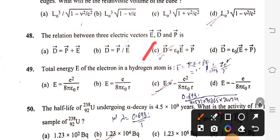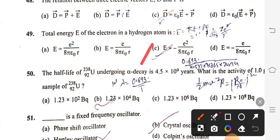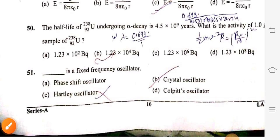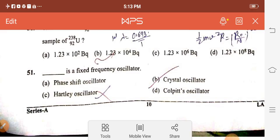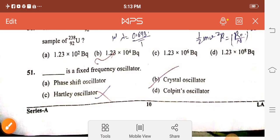Question 49: Total energy E of the electron in a hydrogen atom is E equals minus E square by 8 epsilon naught R, option C. Question 50: The half life of 92 uranium-238 undergoing alpha decay is 4.5 into 10 to the power 9 years. What is the activity of 1.0 gram sample? Right option is 1.23 into 10 to the power 4 becquerel, option B. Question 51: Crystal oscillator is a fixed frequency oscillator.